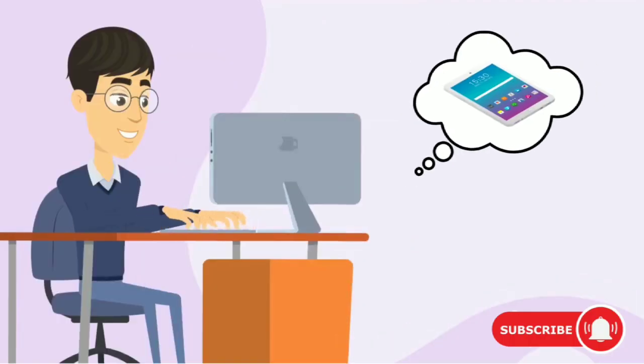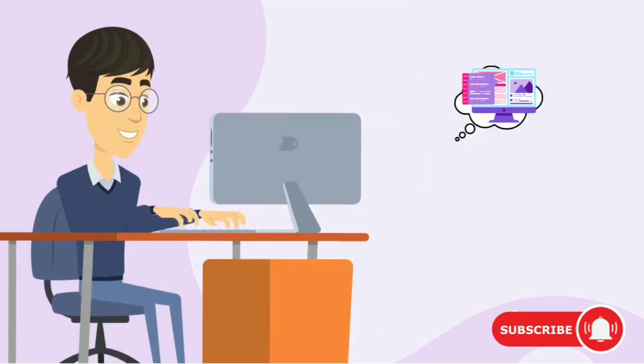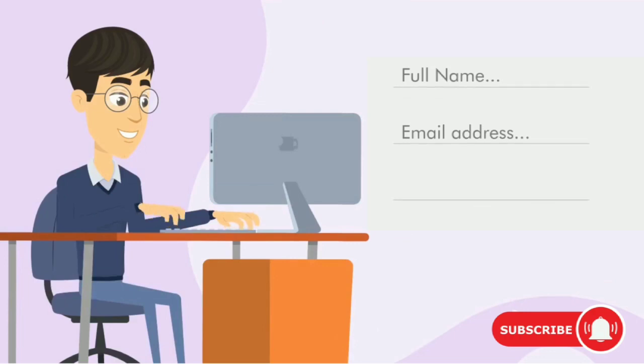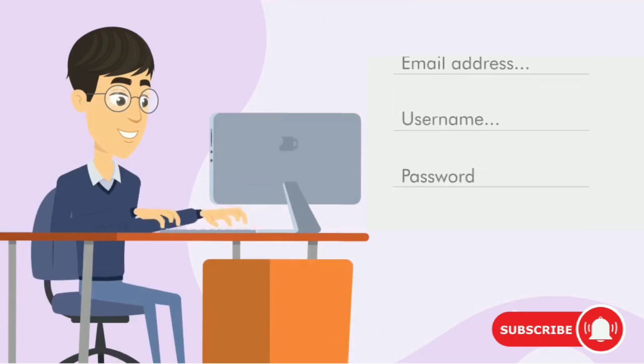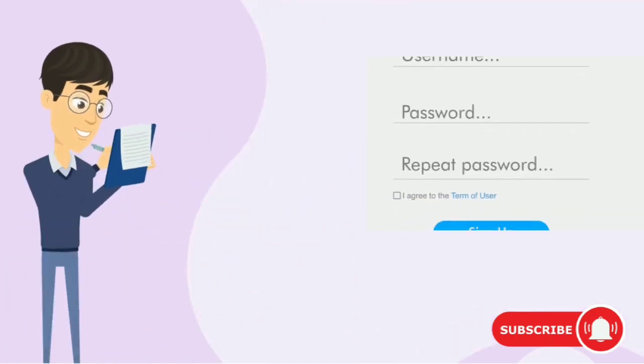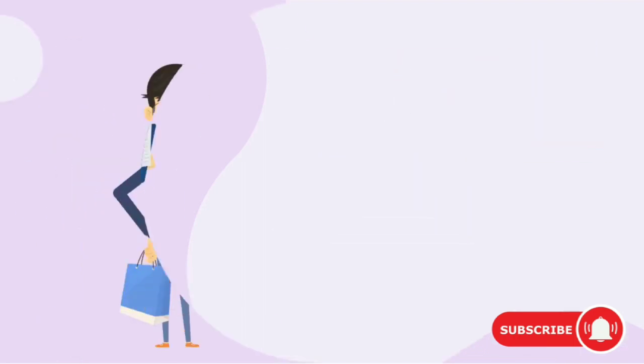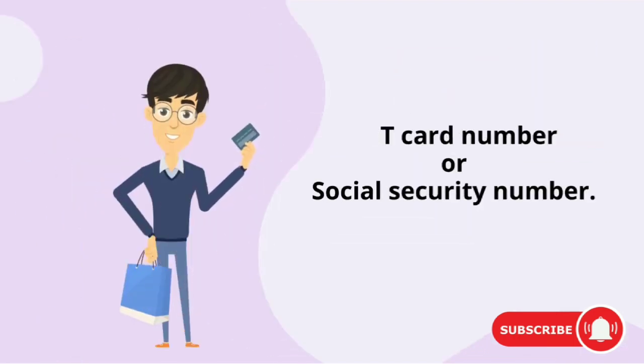To apply for a free tablet with EBT, start by visiting the website of the technology company you're interested in. Most companies have online forms that allow you to fill out your information and submit it for consideration. You will need to provide proof of your eligibility such as your EBT card number or social security number.